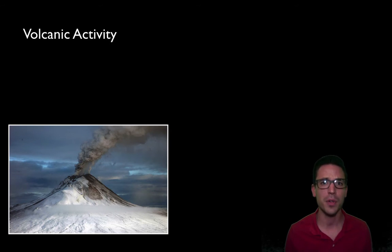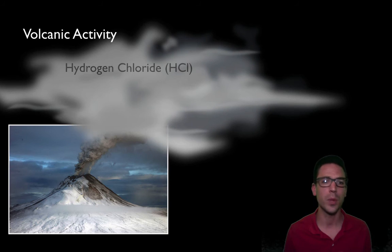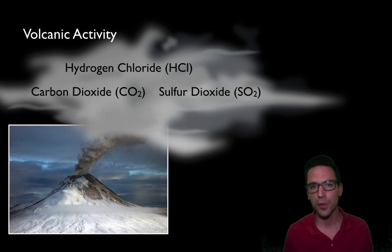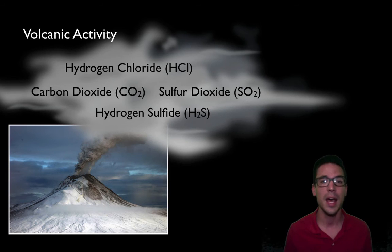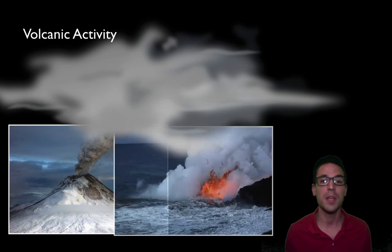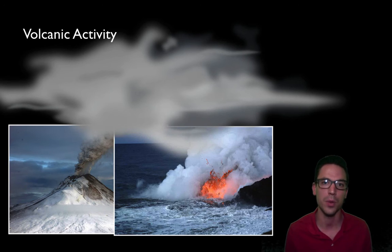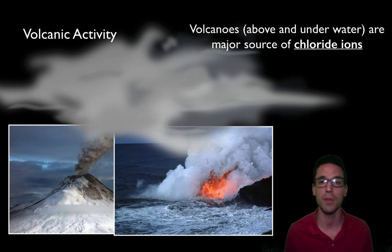When a volcano erupts it releases gases into the atmosphere: hydrogen chloride, carbon dioxide, sulfur dioxide, and hydrogen sulfide. These gases dissolve in atmospheric water as condensation and eventually precipitate down into the ground or the oceans, changing the chemical composition of water. The same happens with underwater volcanoes, which release gases directly into the ocean locally. One gas in particular is chlorine, which is ultimately a major source of those chloride ions — a large portion of the chloride ions in seawater come from erupting volcanoes, either underwater or above.